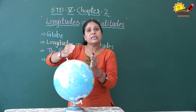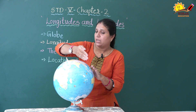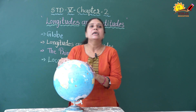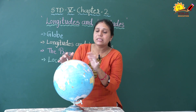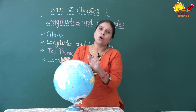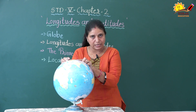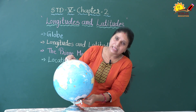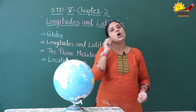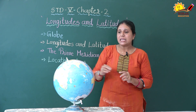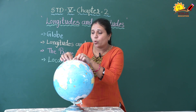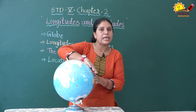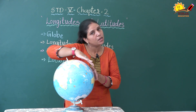The earth takes four minutes to move from one longitude to another. These are known as lines of longitudes. The length of each line is the same, but they are not parallel to each other. In the pole area the distance between them is very small, but in the equator area there is more distance between the two lines.